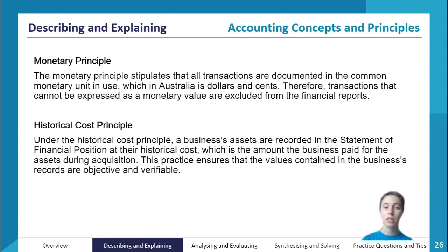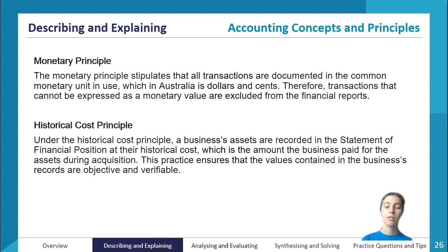For example, a business could manipulate investors by recording assets as far more valuable than they really are, tricking investors into believing the business is performing better than it actually is. The historical cost is verifiable — you can look at the records and see when an asset was purchased and for how much — so there is no subjectivity or bias possible.